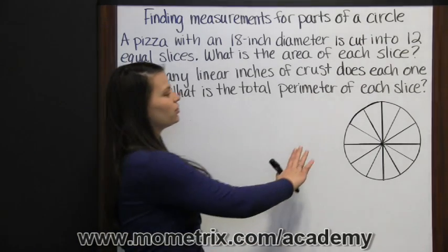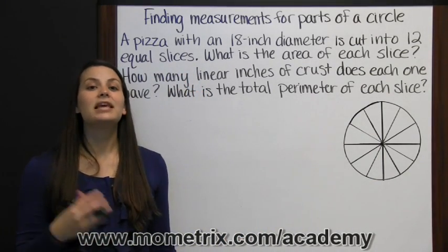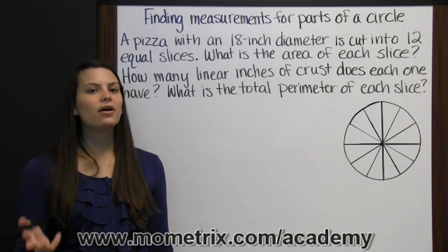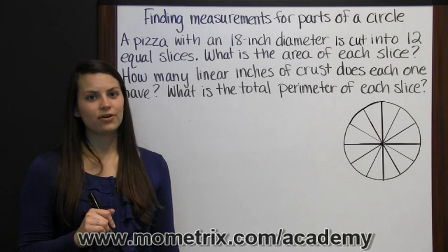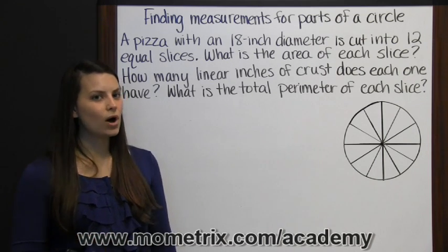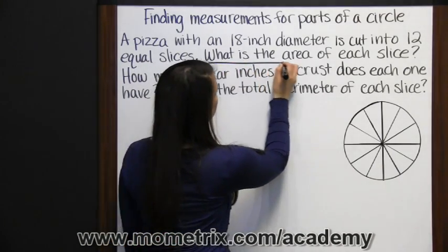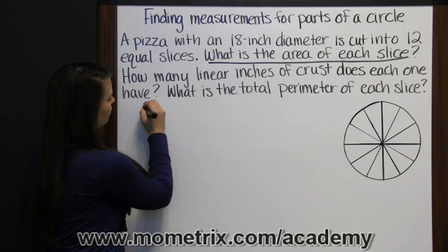So we've cut a circle into 12 equal slices. That means the area of our circle has been cut into 12 equal pieces. So if I find the area of my circle and then divide it by 12, I can find the area of one piece of pizza. That's the question we're starting with. What is the area of each slice? So first I'm going to find the area of my circle.